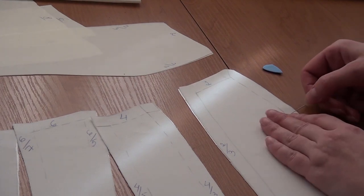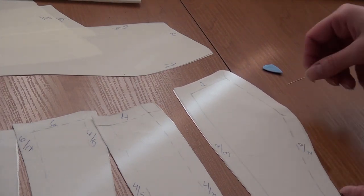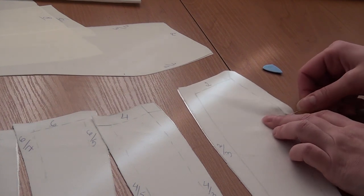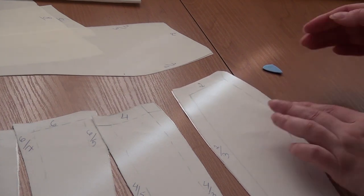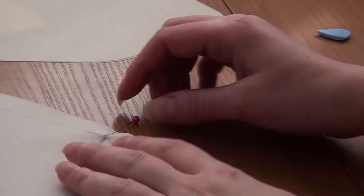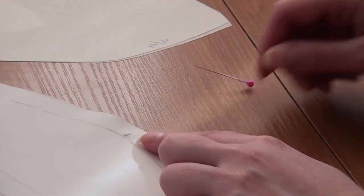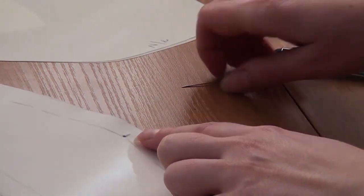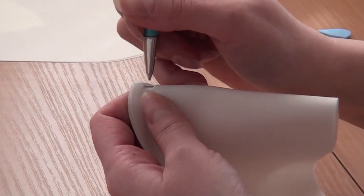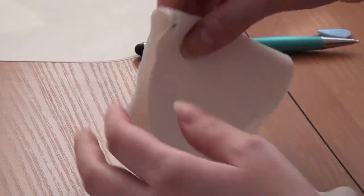I stick a pin into the bust point of details number two of the corset and copy the location of this point on the second of the same detail in this way. I want to explain again. Here are two details number two. One detail on the top of another. This is the bust point of one of details number two, and this is another same bust point, but on another detail number two.